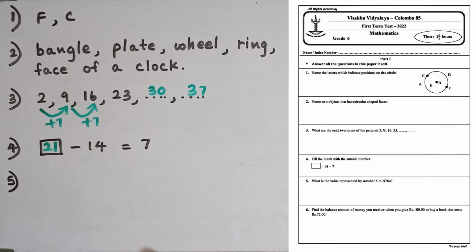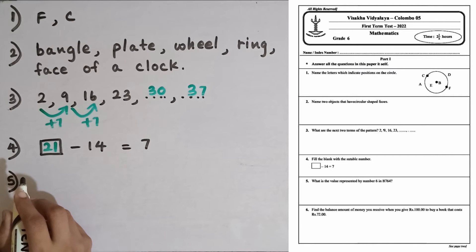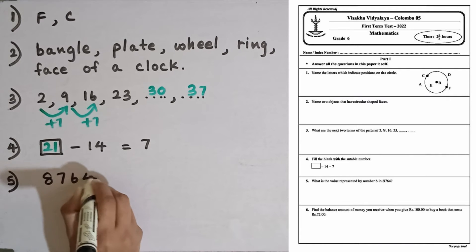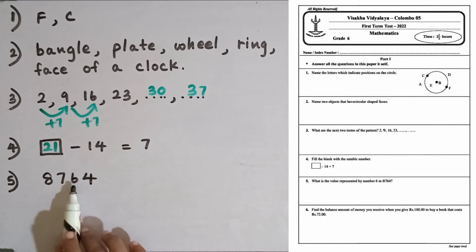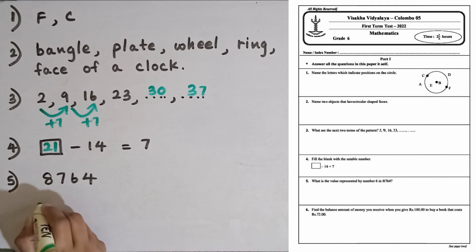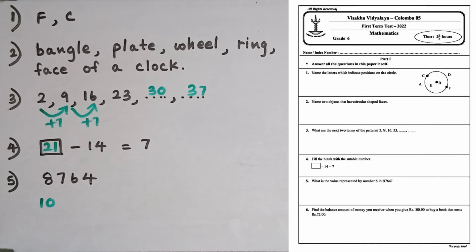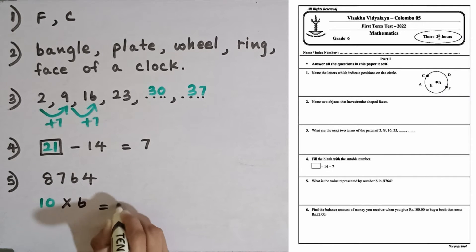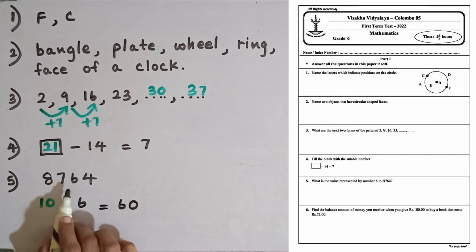Question number five: what is the value represented by the digit 6 in 8,764? This digit is in the tens place. The place value of the tens place is 10, so to find the value represented by digit 6 we multiply the place value by this digit — that is equal to 60. 60 is represented by this digit.